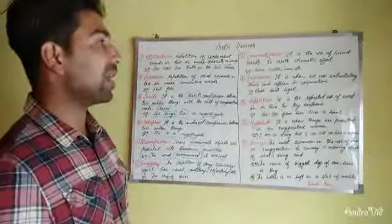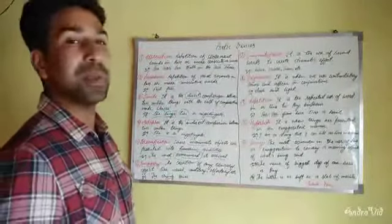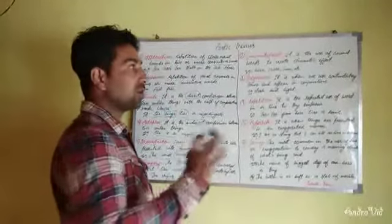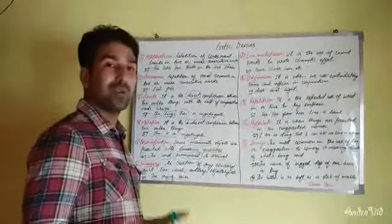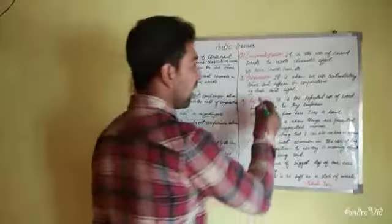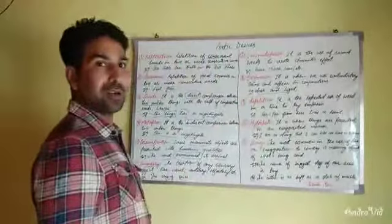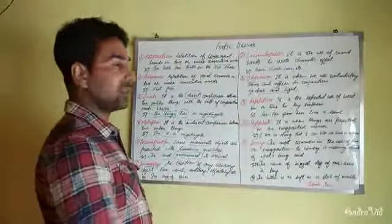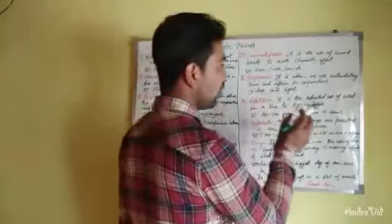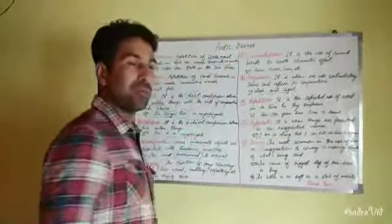Oxymoron is when contradictory terms are used together in conjunction. When contradictory terms — like 'dark' and 'light' — appear side by side, we have an oxymoron.